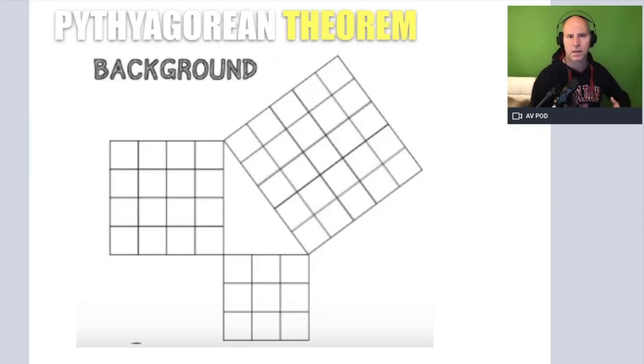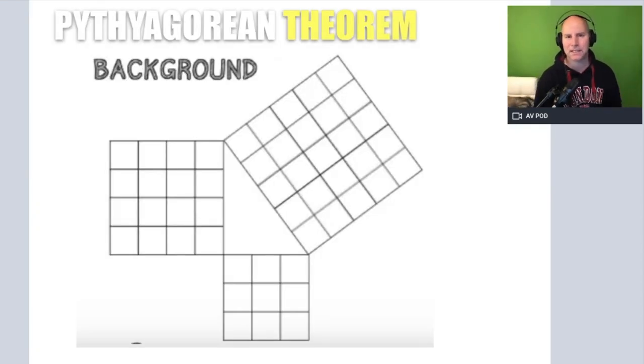The stuff that we're going to do with the Pythagorean theorem, it all starts with the basics. Everything that we're going to do on the problems that we're going to see for elementary, middle school, and high school, it really just starts with this idea right here that if we have a right triangle. I'm just reviewing some important background knowledge on the Pythagorean theorem, but if we have a right triangle...